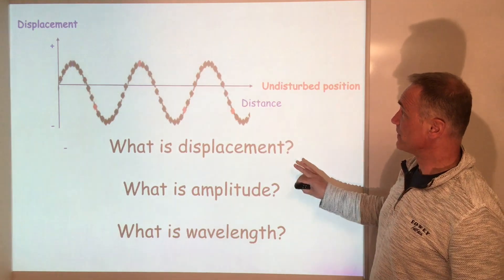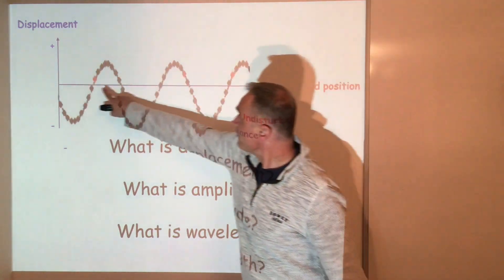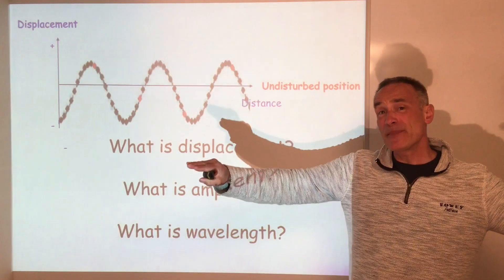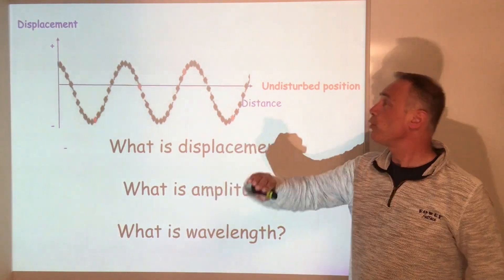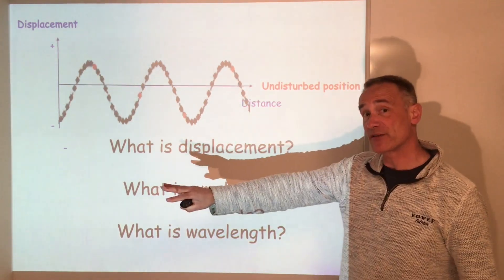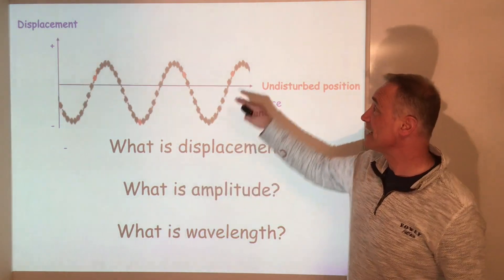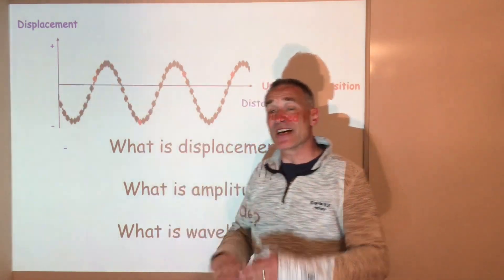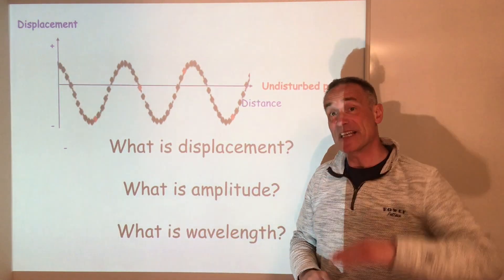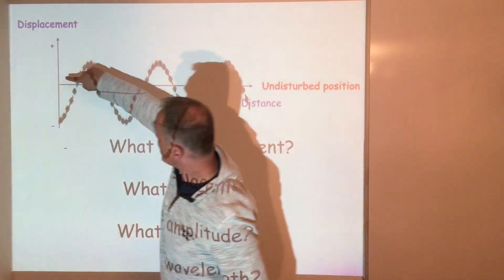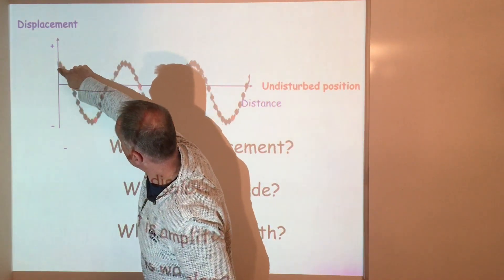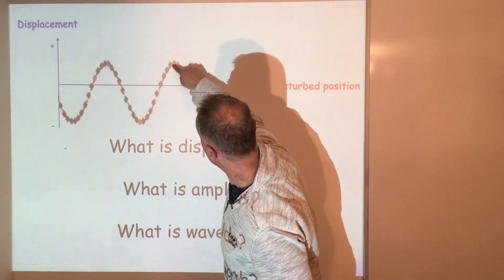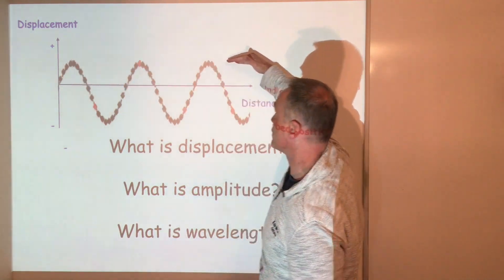Let's have a look at this wave. We've got the undisturbed position — that's a line in the middle of a wave where, if you imagine a water wave and there's no wave at all on the water, it would be flat. Displacement is a distance in a particular direction. You can see the displacement of a wave can be any amount up to the maximum, and that maximum position is the amplitude.